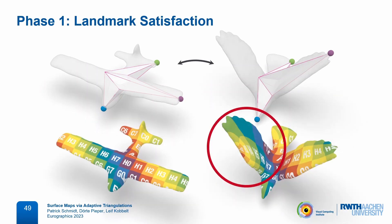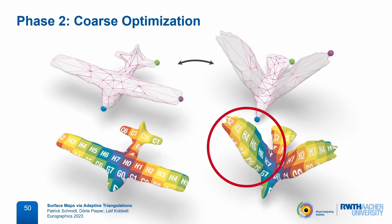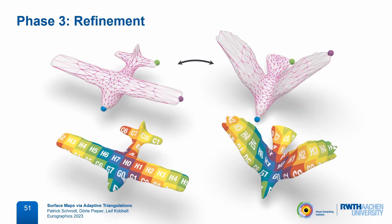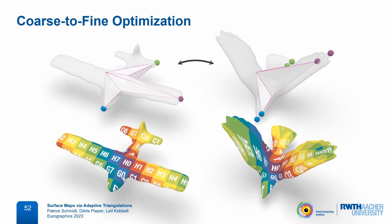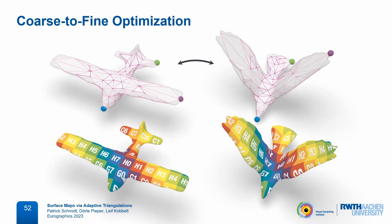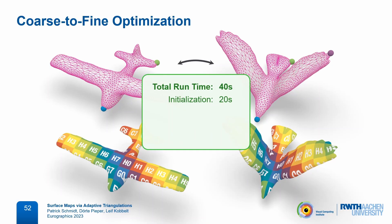Despite the low resolution, we already obtain a very smooth map between the original input surfaces, but some geometric features like the wing might not be well aligned yet. In the second phase, we perform the main map optimization still at a relatively coarse resolution, and here we can see how this already properly aligns the wing. Finally in the third phase, we refine to a target resolution which gives enough degrees of freedom for fine-level map adjustments. This took a total of 40 seconds: 20 seconds to pre-compute the initial maps to the sphere, less than one second for landmark satisfaction, only two seconds for the coarse map optimization, and 17 seconds for map refinement.